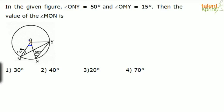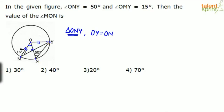How do we do it? We know that O is the center of the circle. From the center to any point on the circumference is nothing but the radius. So OY, OM, and ON are all equal — all three are radii.